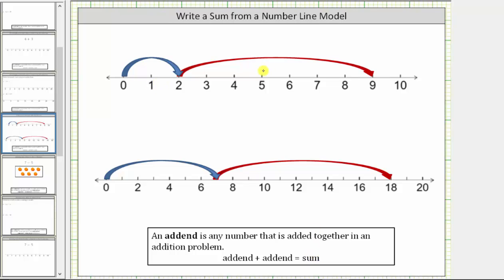Because both models have two arrows, we know we have two addends. The first addend is indicated by the arrow starting at zero, or the blue arrow, and the second addend is indicated by the second arrow, or the red arrow.